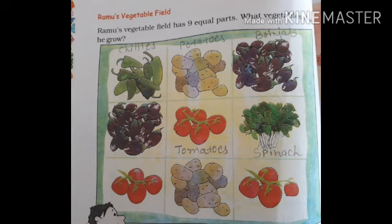The first one you can see is chilies — that means mirch. Then potatoes — aloo. Then brinjals. Then tomatoes. Then spinach. Then again tomato, then potato, and again tomato. This is how we describe Ramu's vegetables.